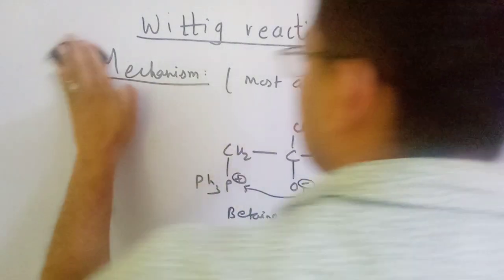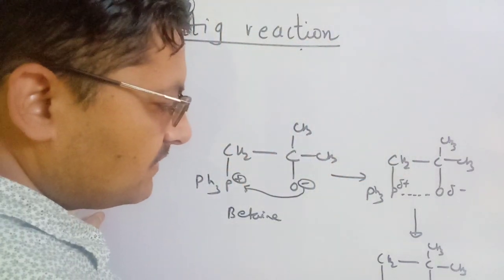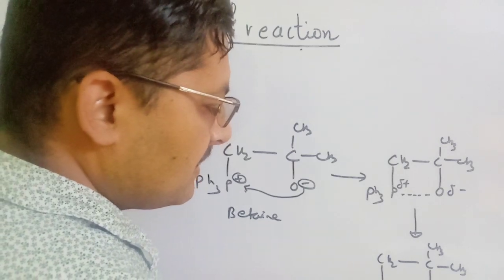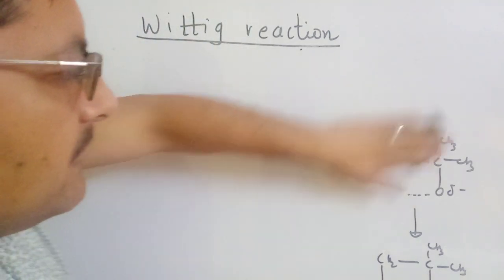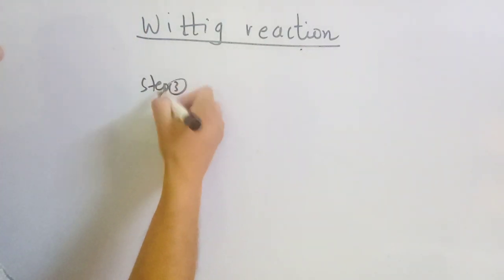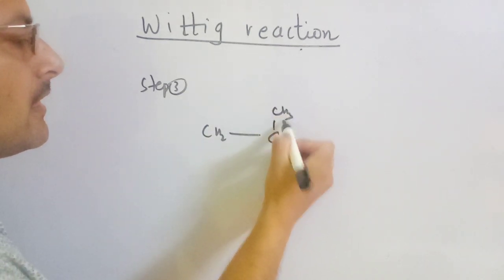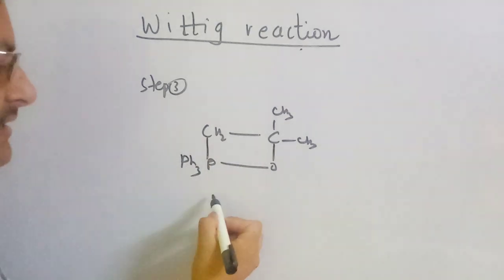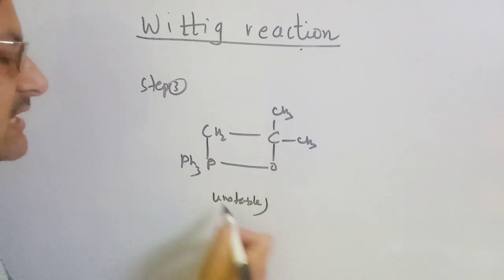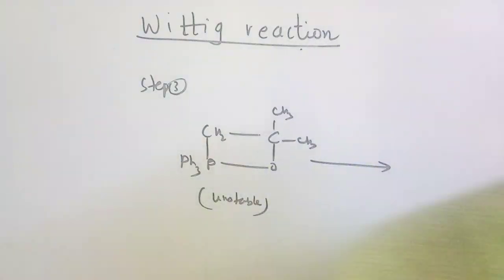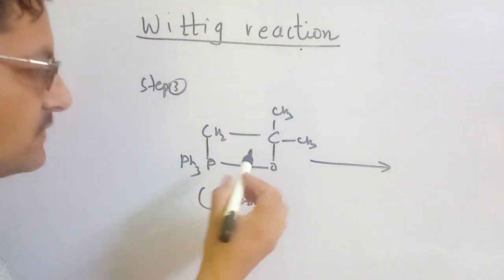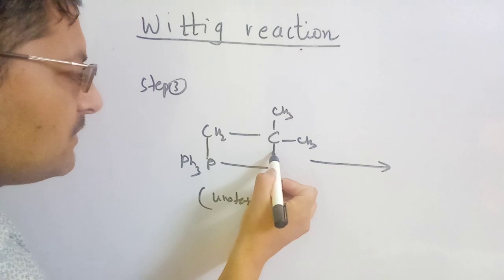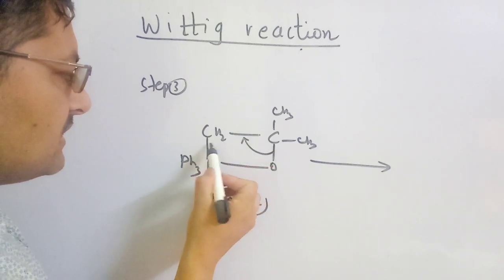Step 3: the four-membered cyclic ring — the oxaphosphetane — is very unstable. Because it is unstable, this four-membered ring breaks open and dissociates. This dissociation leads to the final products.